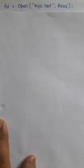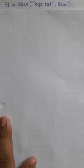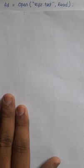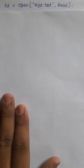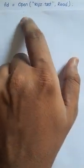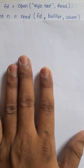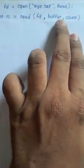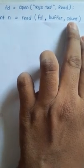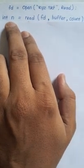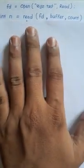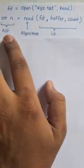Hello friends, last lecture we saw the algorithm or system call for read. Today we are going to deal with the read algorithm. In order to use this read algorithm we have to use the open system call first. This open system call returns one file descriptor which will be used in the read system call. The read system call takes three parameters: the fd returned by open, the buffer, and the count of how many bytes we want to read. This algorithm returns the actual number of bytes read.